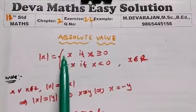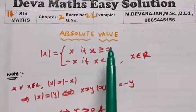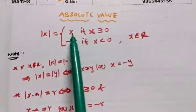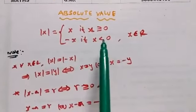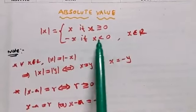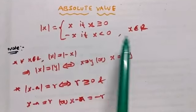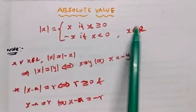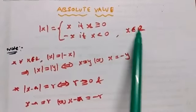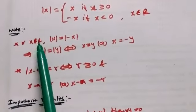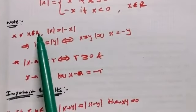The absolute value of X is defined as: X if X is greater than or equal to 0, and minus X if X is negative. Here X is a real number, and whatever X belongs to R.